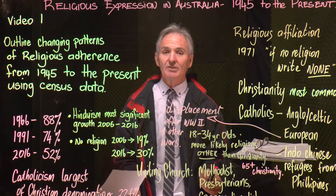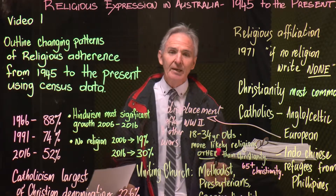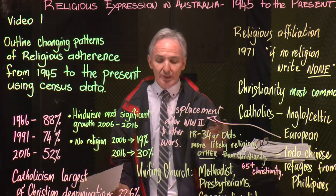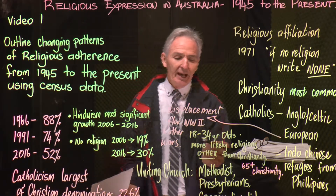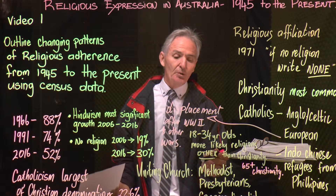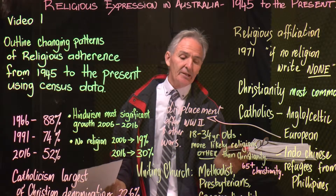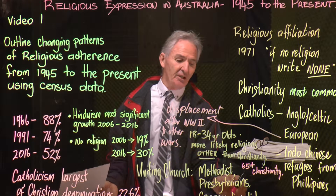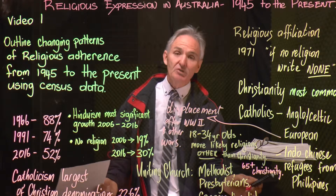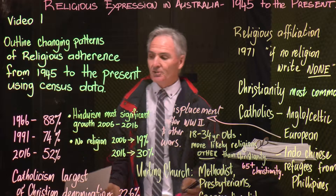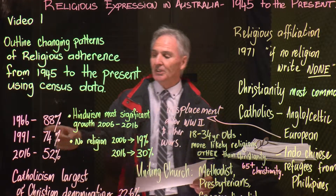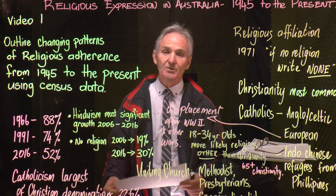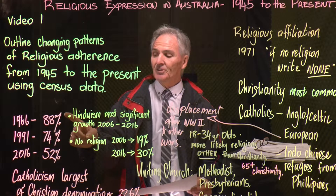Looking at the census data — especially the 2016 census — you need to compare the statistics. Generally, 18 to 34 year olds are more likely to have a religion other than Christianity, while those aged 65 plus will generally nominate as being Christian. In 1966, interestingly, 88% of those who filled in the census said that they were Christian.